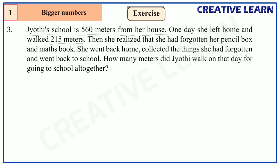She walked about 215 meters, then she realized that she had forgotten her pencil box and math book. She went back home, collected the things she had forgotten, and went back to school. The question is: how many meters did Jyothi walk on that day to go to school altogether? The total distance between the school and Jyothi's home is 560 meters. Firstly she walked about 215 meters, then she returned home again to collect the pencil box and math book.